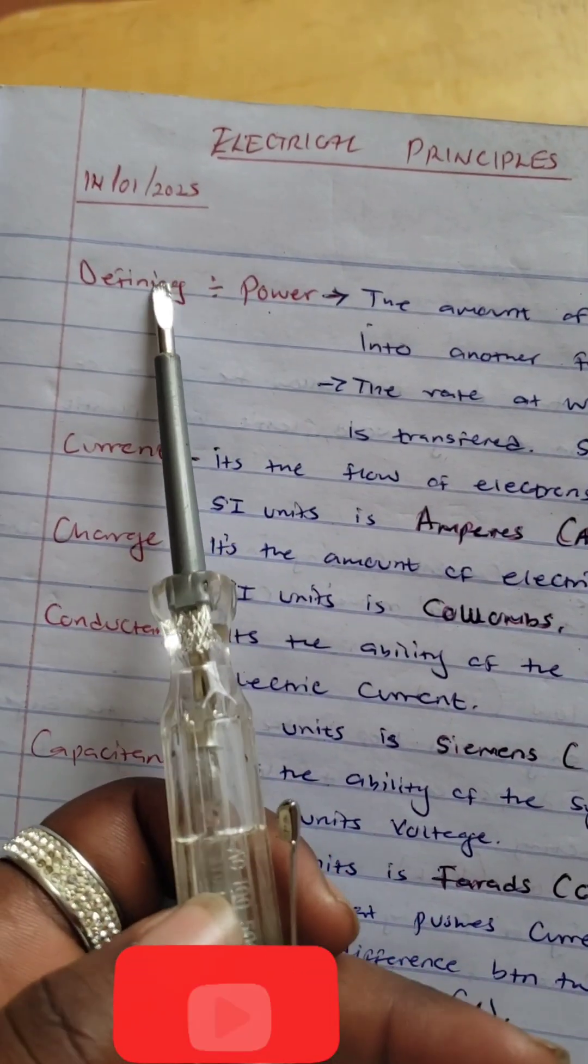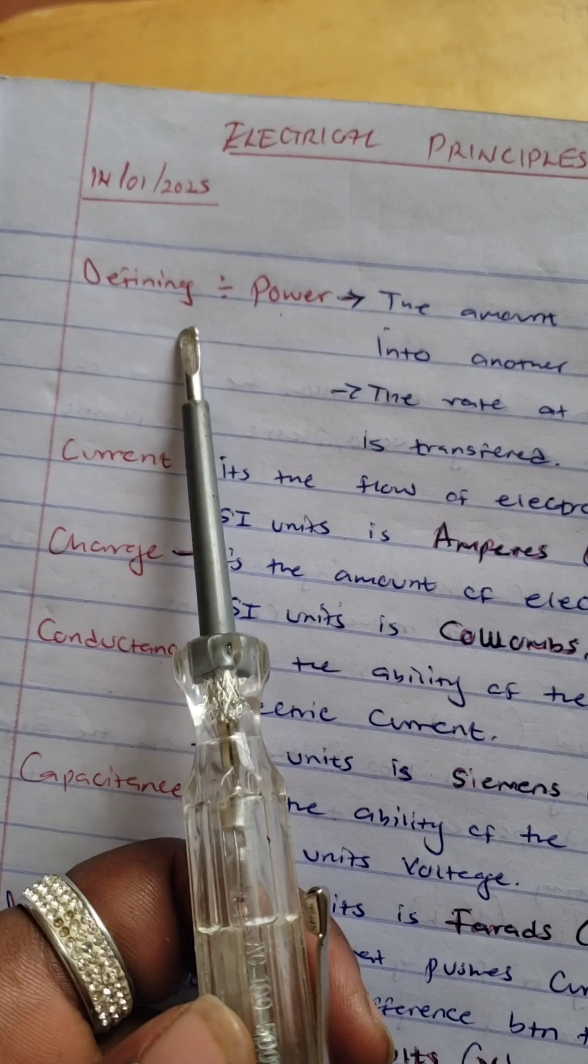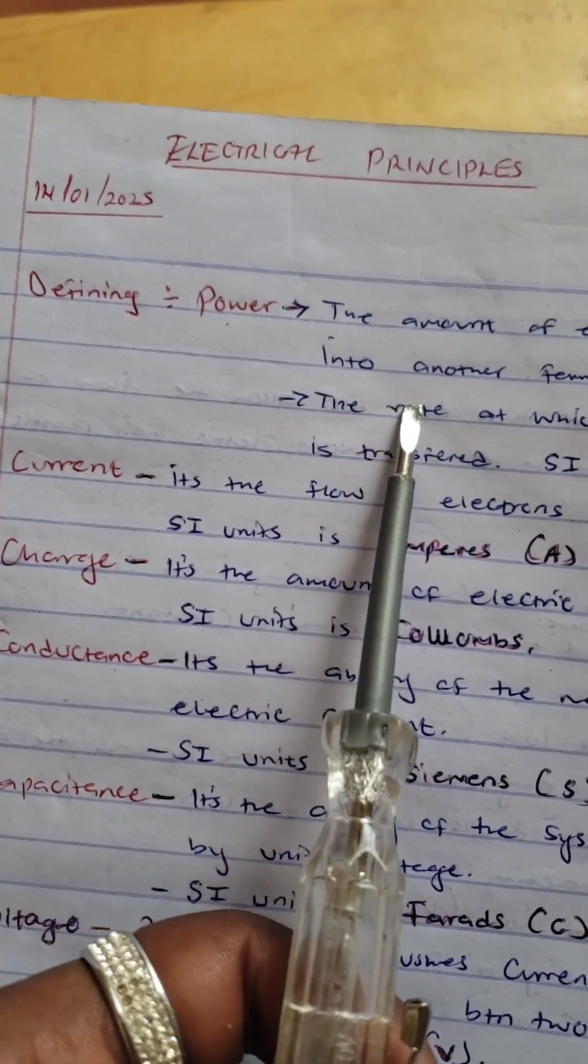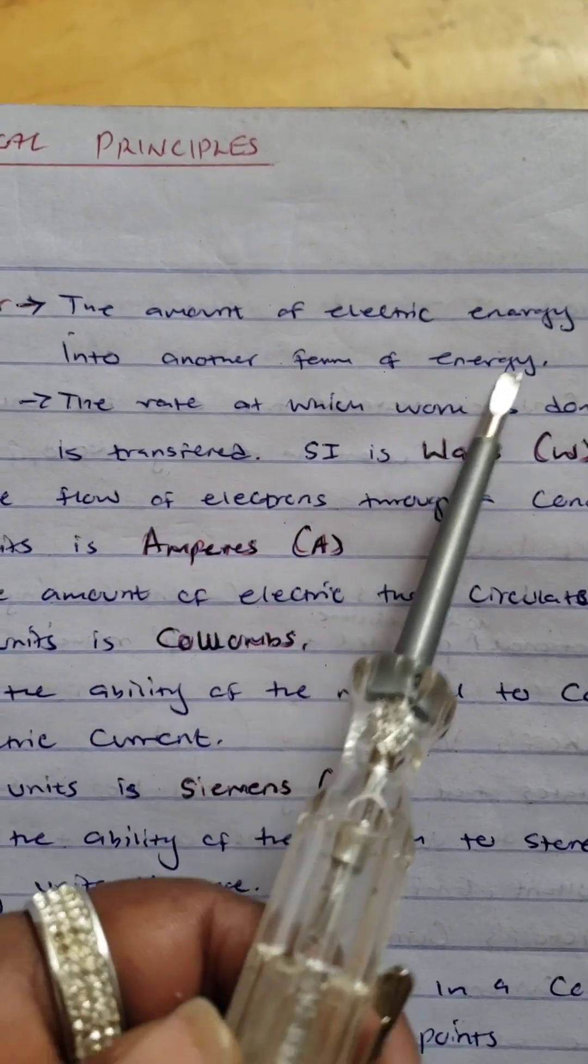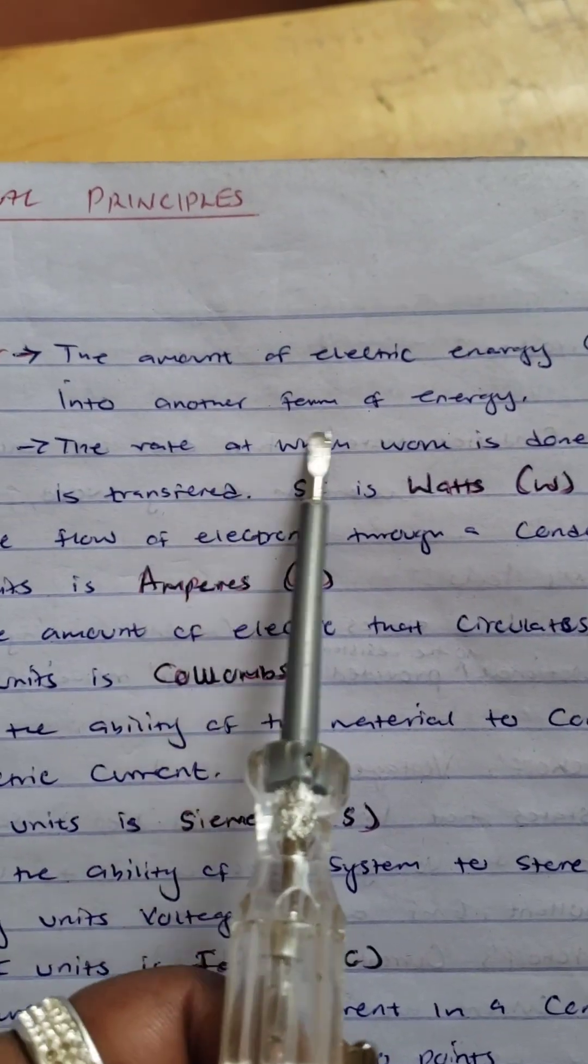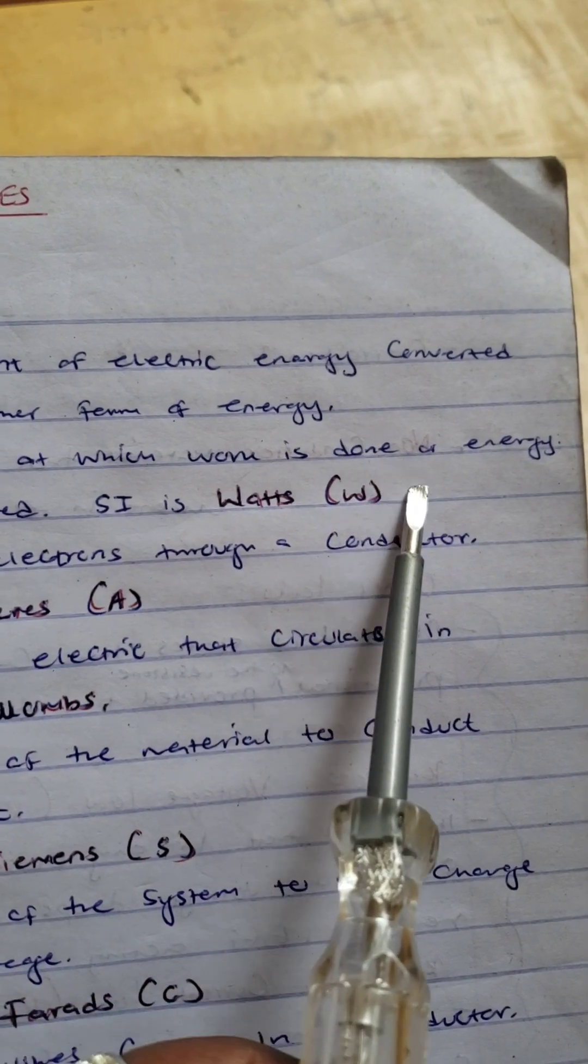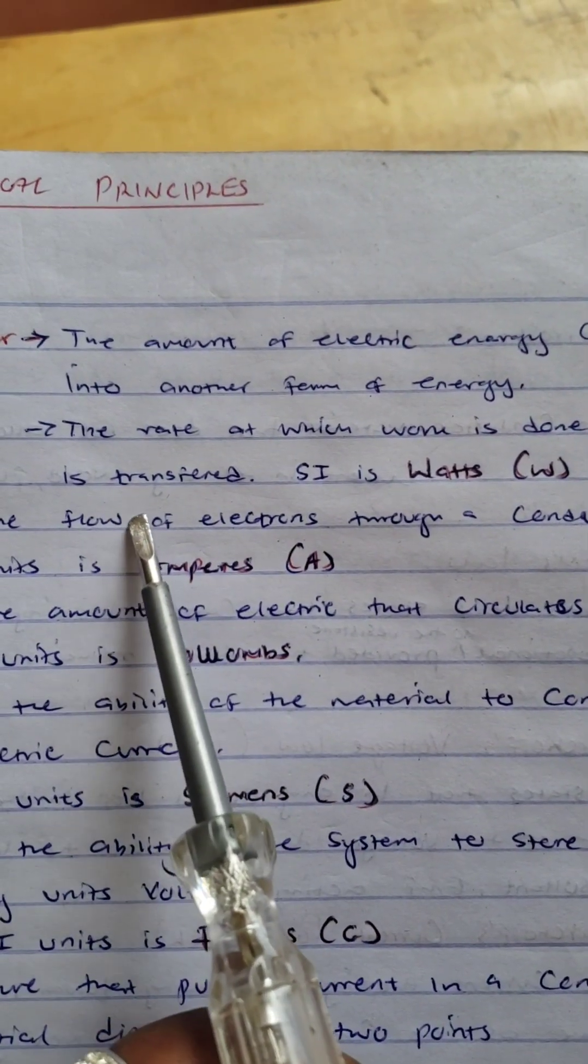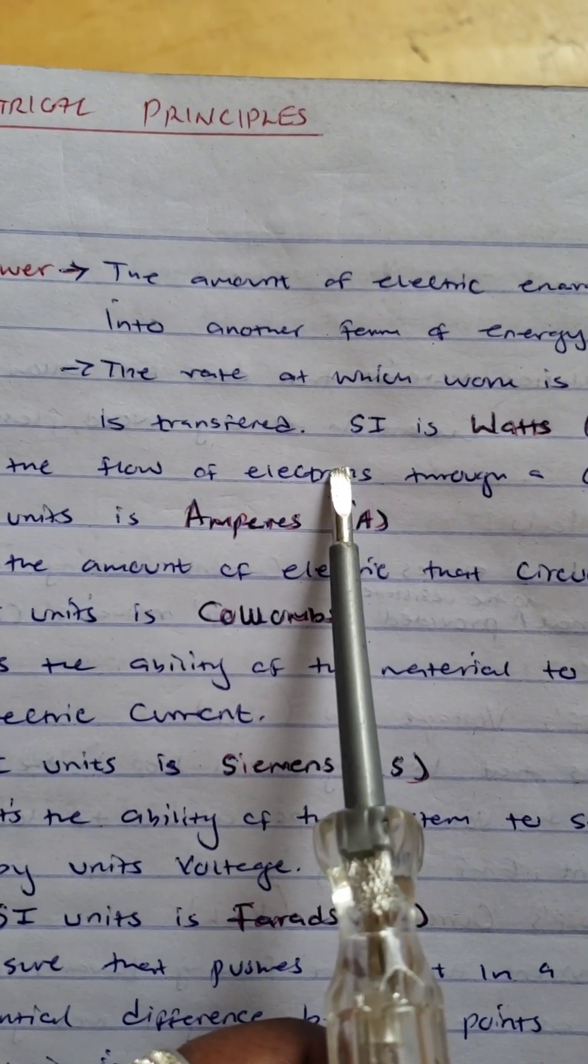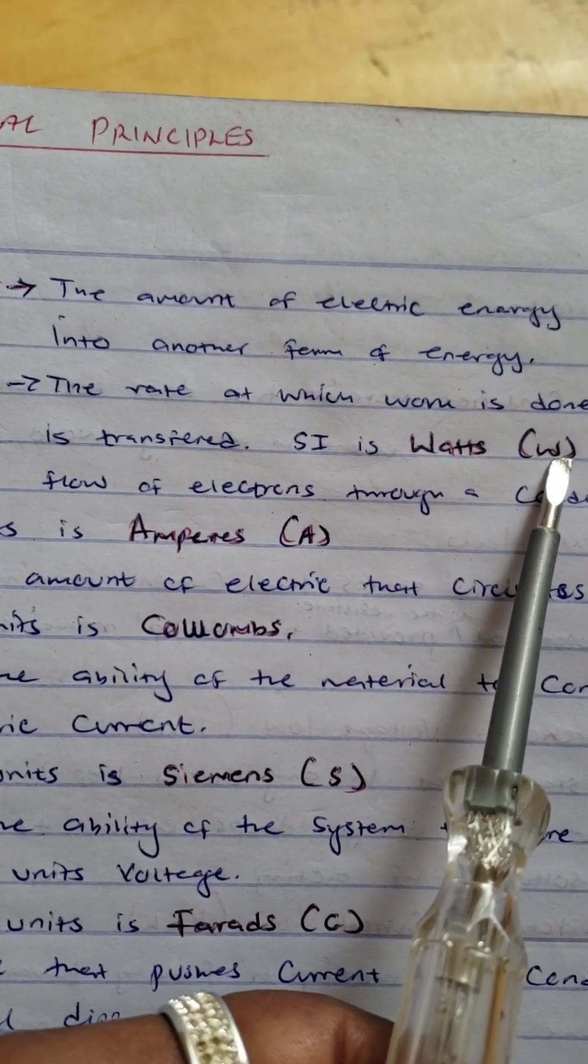Electrical engineering, please come here. Let's define electrical principles. Let's start by defining power. Power is the amount of electric energy converted into another form of energy, the rate at which work is done or energy is transferred. The SI unit of power is watts, letter W.